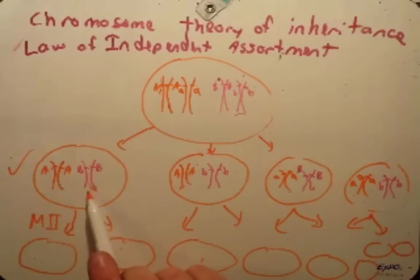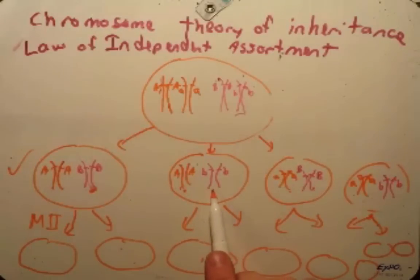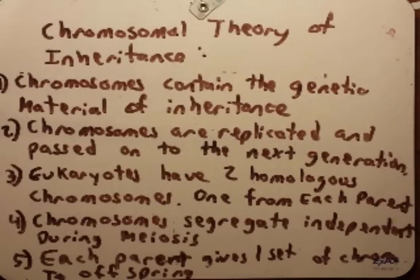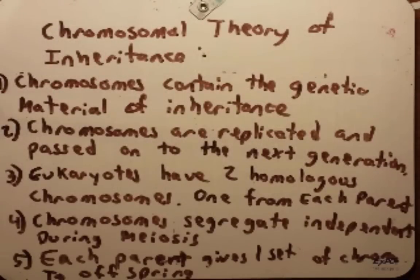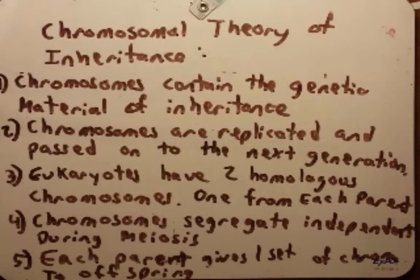Big A is just as likely to get big B in the gamete with it, or big A can get little b — equally probable events. So with the blending of meiosis and Mendel's laws of segregation and independent assortment, other scientists got involved and ultimately we came up with this chromosomal theory of inheritance.